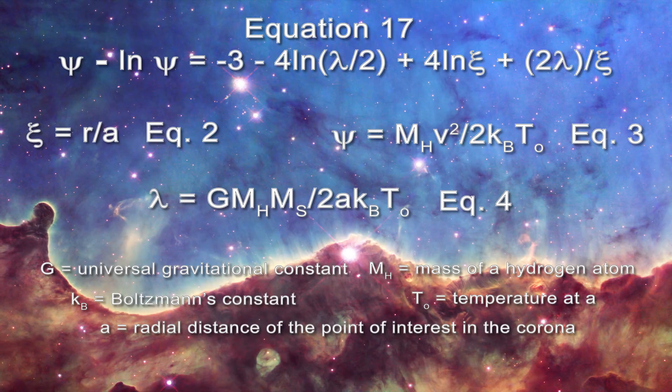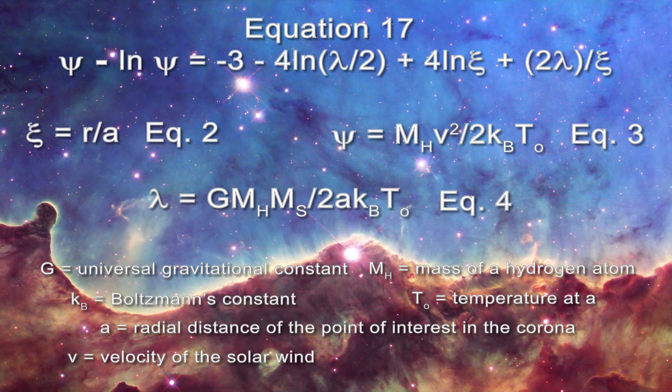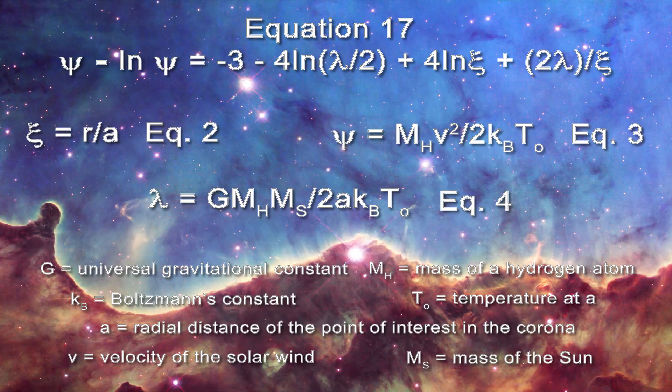T sub zero is the temperature at that location. V is the velocity of the solar wind and m sub s is the mass of the sun.